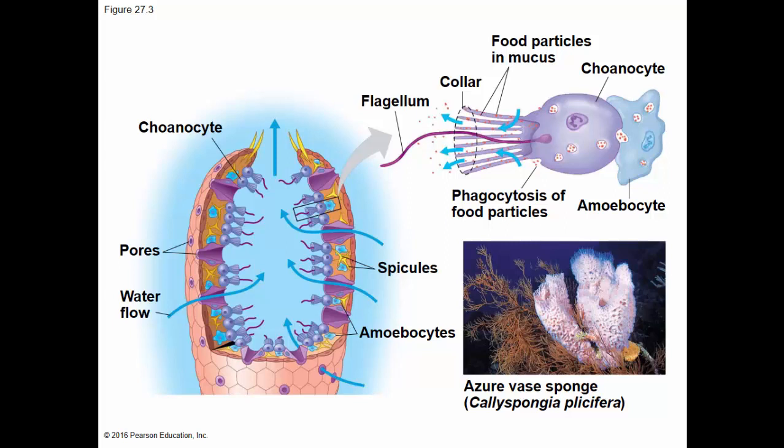Also note the amoebocytes shown in blue here. The body of the sponge in the right-hand corner indicates that the sponge is kind of irregularly shaped — so it's lacking any type of symmetry. We'll learn in a moment how that's another feature that distinguishes groups of animals from one another.